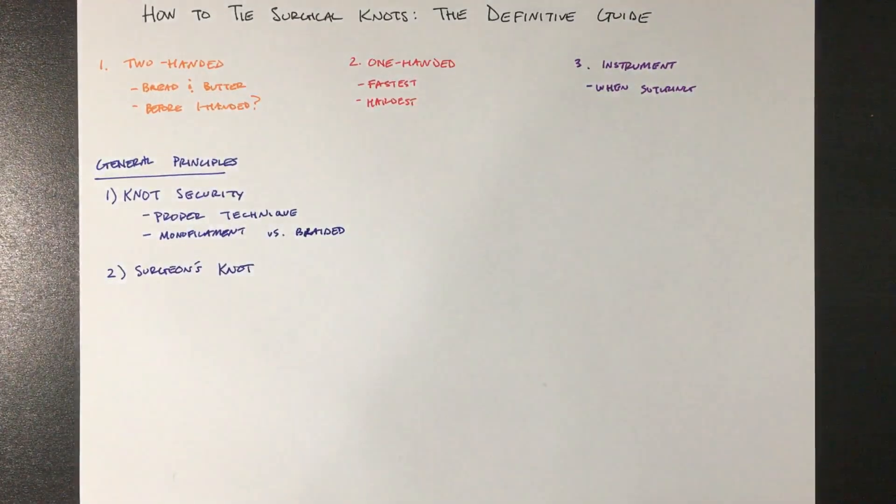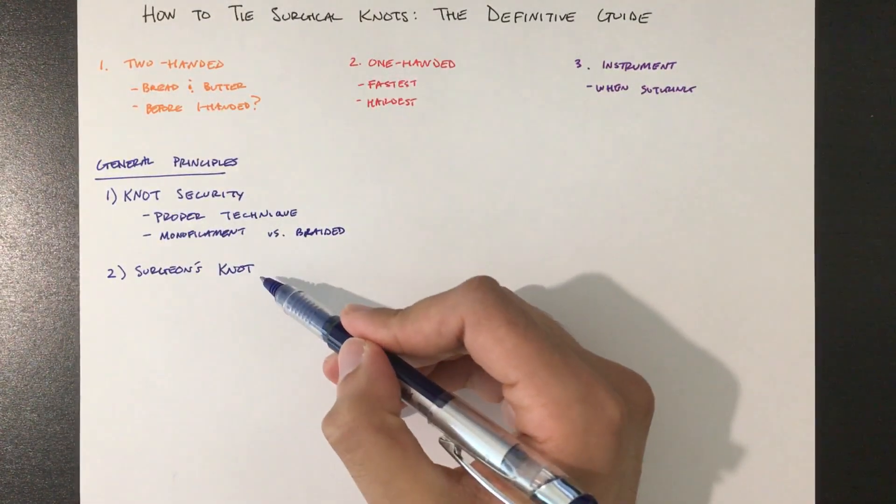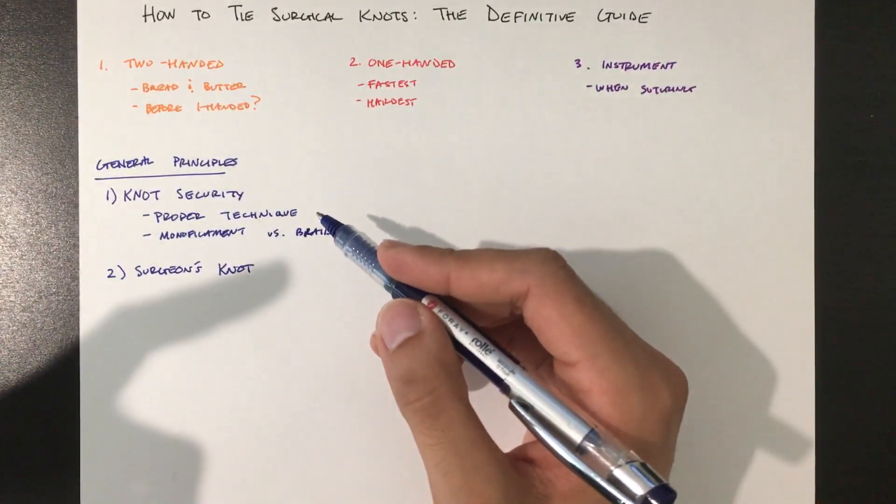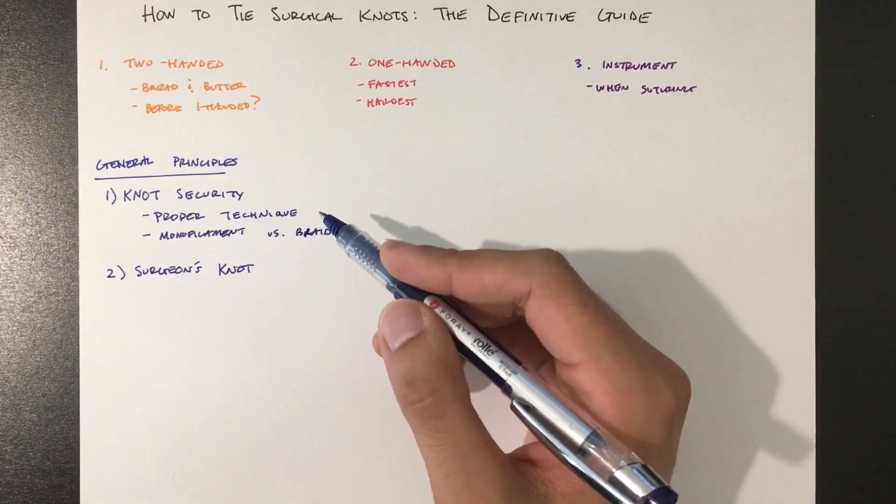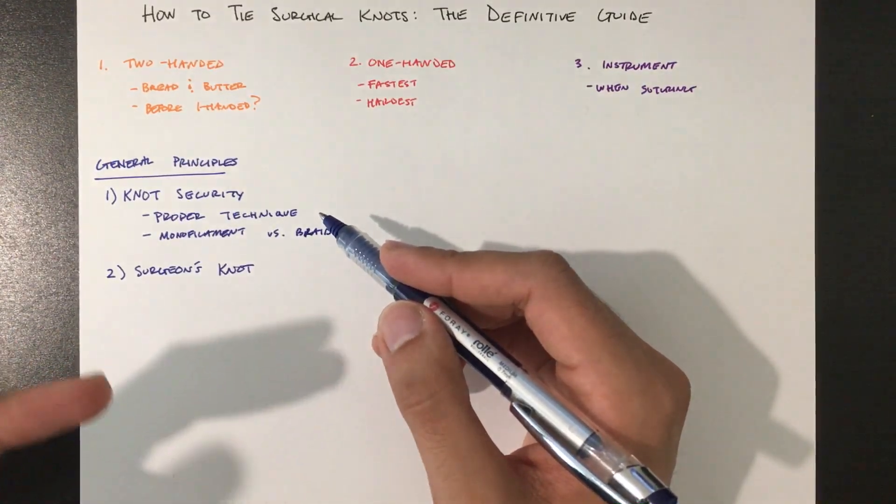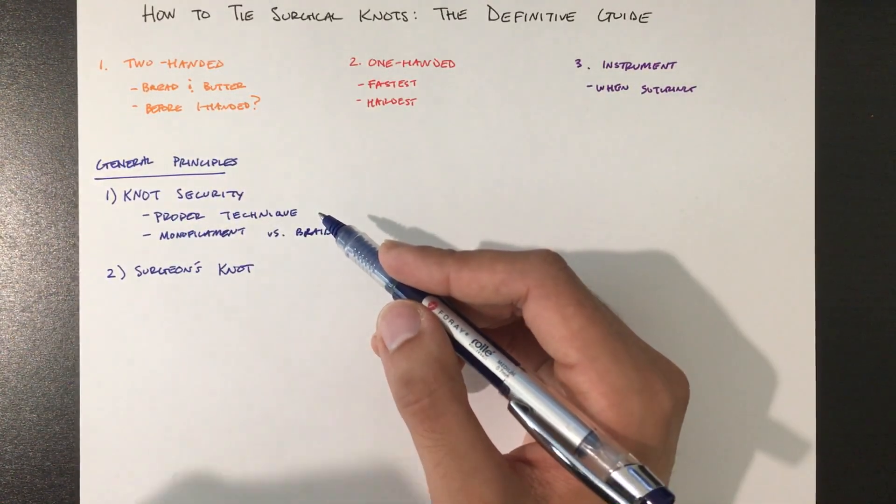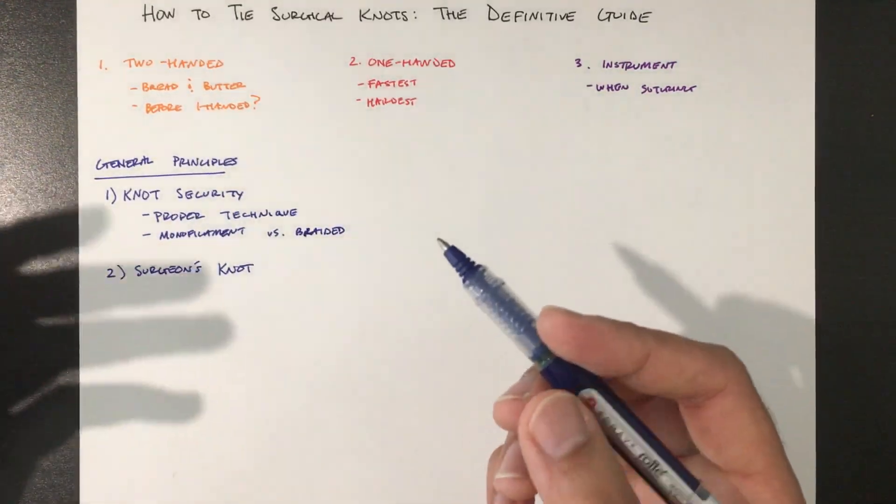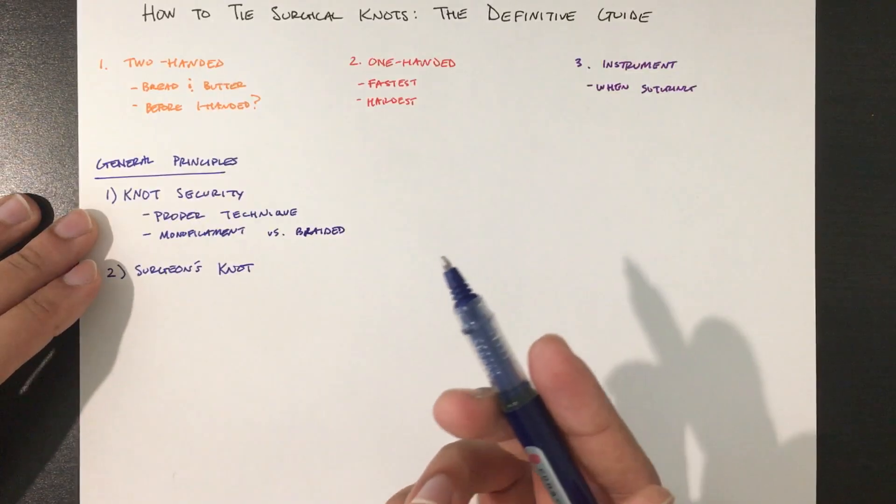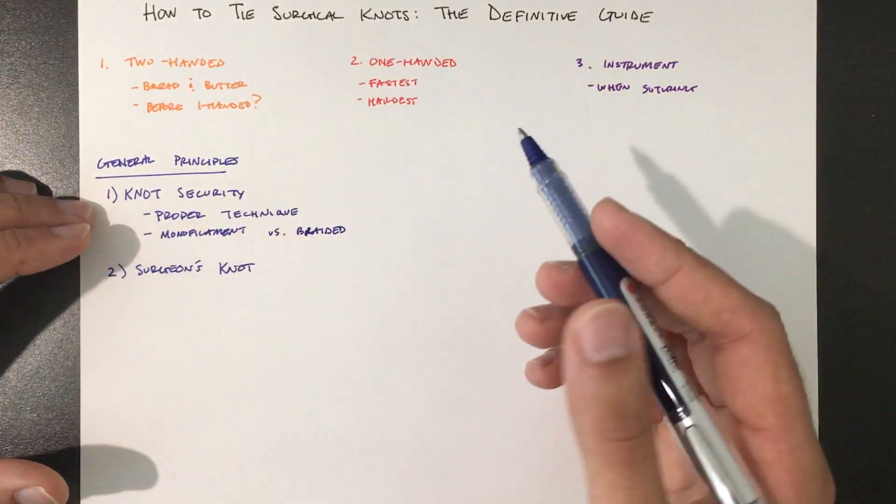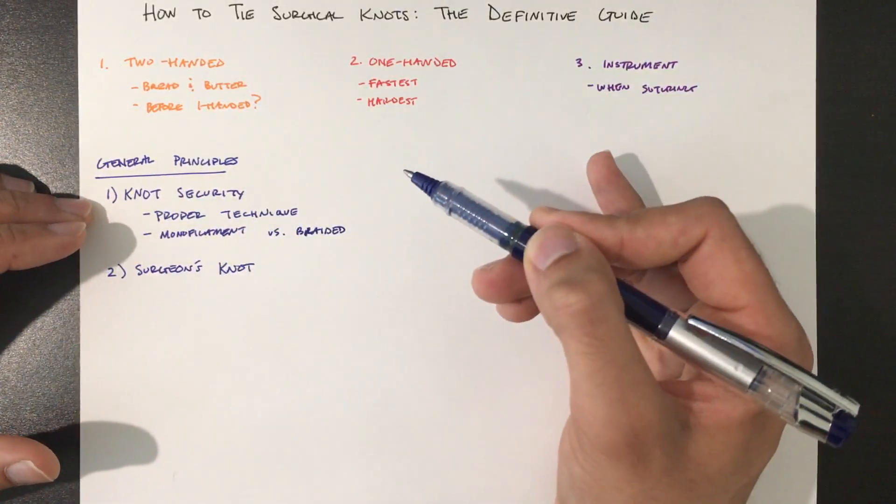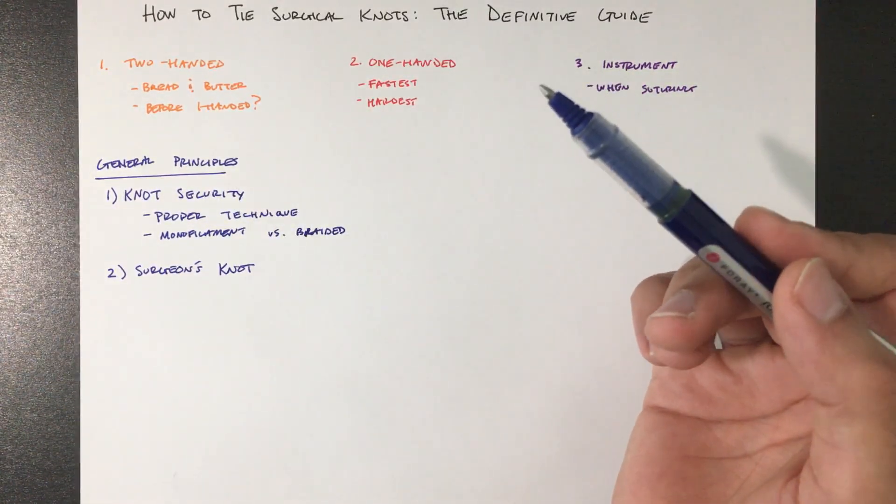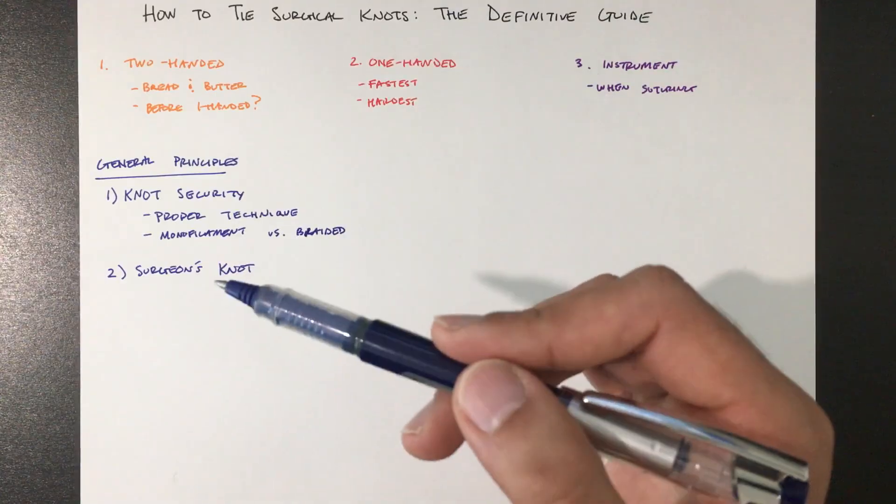The surgeon's knot. Sometimes you should use a surgeon's knot, but not always. All it is is during the first throw, you loop the suture twice in the same direction. This allows you to tie under tension and prevent slippage, so that when you lock it by throwing in the opposite direction, it prevents an air knot. Why do you not always use it? Because excess material. Generally speaking, you want to use the least amount of suture possible to achieve a secure knot. Excess suture will either irritate the patient if it's above the skin, or if it's below the skin, it will increase inflammation.